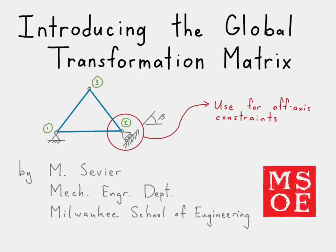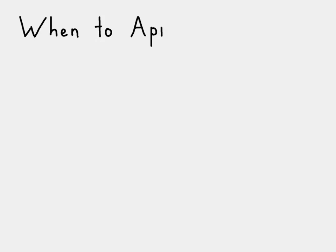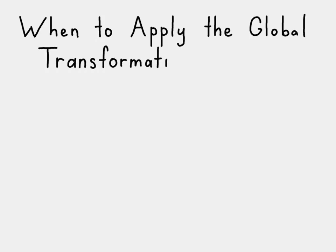This video investigates the global transformation matrix, which we need to use if we have an off-axis constraint. Let's go ahead and get started with the first question: when do we need to apply this global transformation matrix?